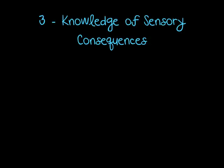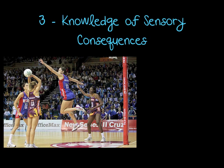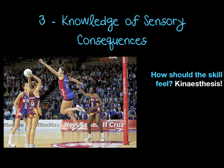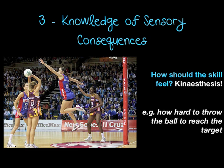Memory item three is knowledge of sensory consequences. Here we have a netball game. Knowledge of sensory consequences is about how the skill should feel — thinking about kinesthesis. In this situation, how hard does the attacker in purple need to push the ball in order to shoot it over the defender and into the net? Or in another situation, how hard to throw the ball to reach the target? It's knowledge of what you're feeling — how should this skill feel?